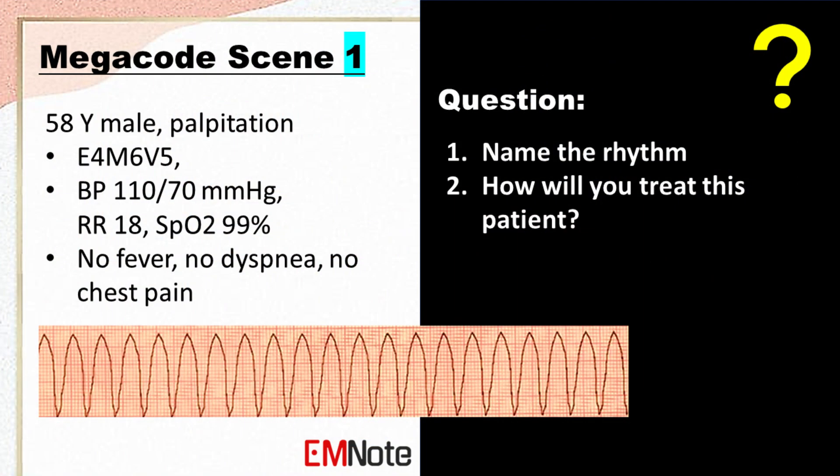A 58-year-old male patient presented with palpitations. He is connected to a defibrillator monitor on arrival to the emergency department. His vital signs were as follows: blood pressure 110/70 mmHg, respiratory rate 18 breaths per minute, and oxygen saturation 99%. The patient denied fever, shortness of breath, or chest pain.